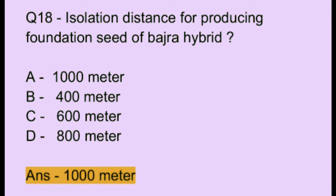Question number 18. Isolation distance for producing foundation seed of bajra hybrid is: Option A: 1000 meters. Option B: 400 meters. Option C: 600 meters. Option D: 800 meters. The correct answer is option A, which is 1000 meters.